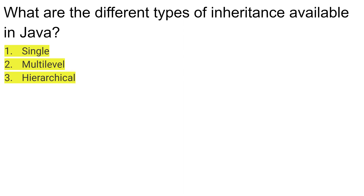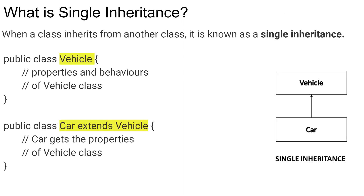Single inheritance is where a class inherits from another class. Looking at the diagram, we have a Vehicle class and Car extends from Vehicle. In the code snippet, public class Vehicle is the parent class, and below that we have public class Car that extends from Vehicle. Car gets all the functionality that Vehicle has — this is known as single inheritance in Java.